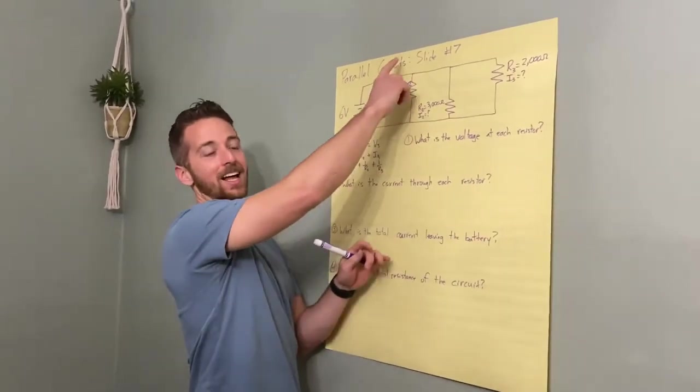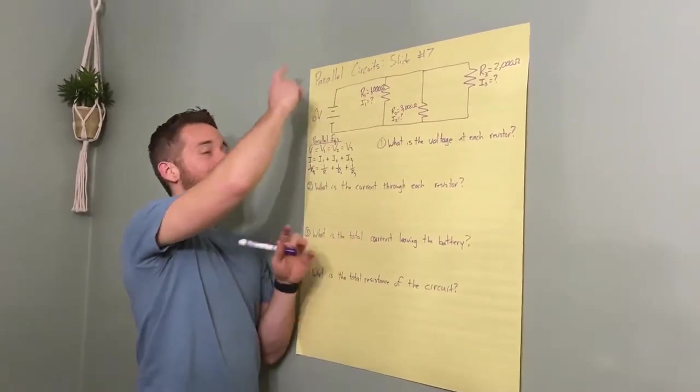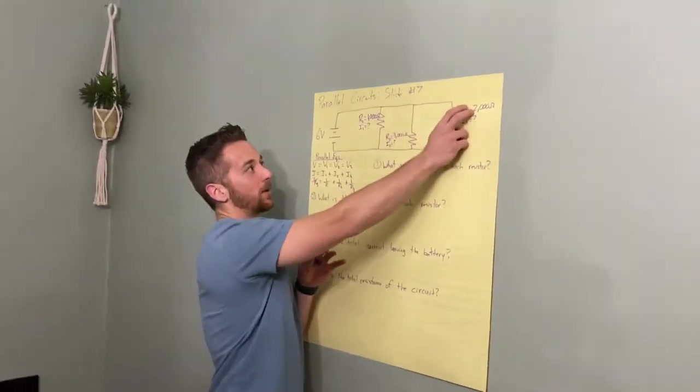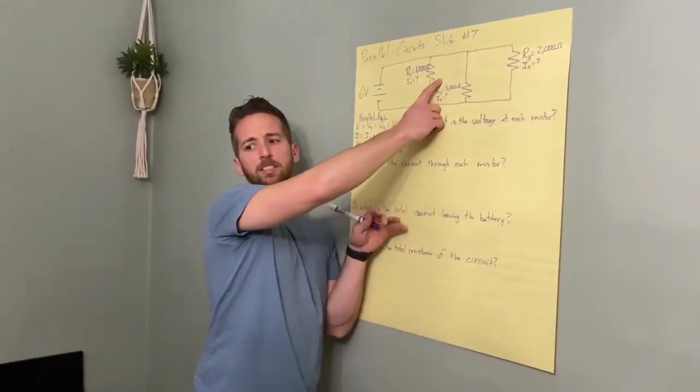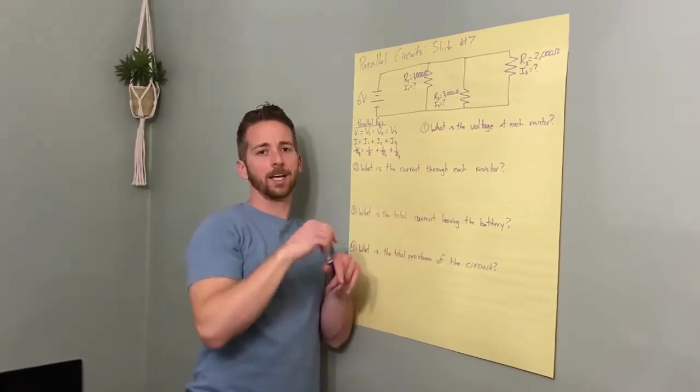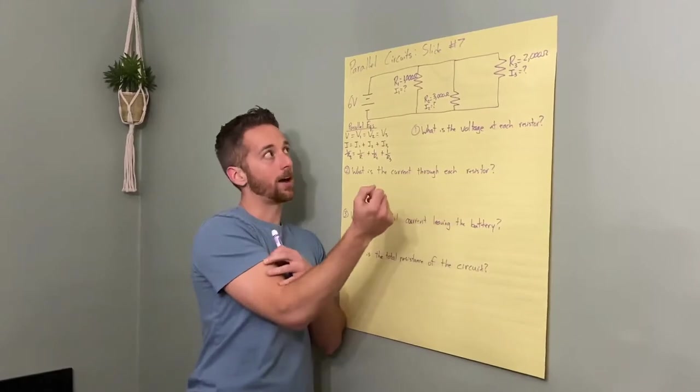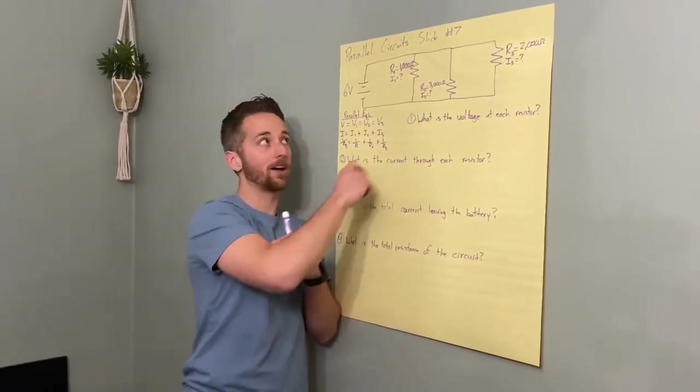Alright, Parallel Circuits, Slide 7. Here we go, I tried to draw it. Six volts and we got three different loops, one thing to note. I wrote a thousand. On yours it says 1k ohm. What does k mean? Means kilo, which is a thousand.